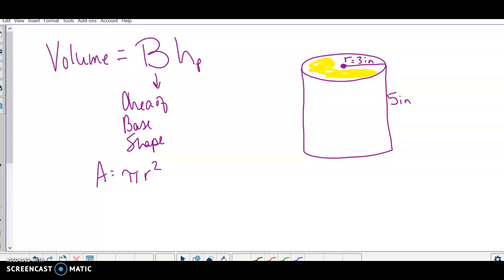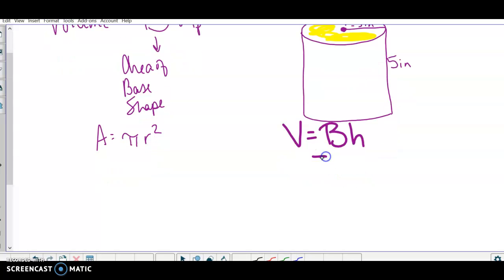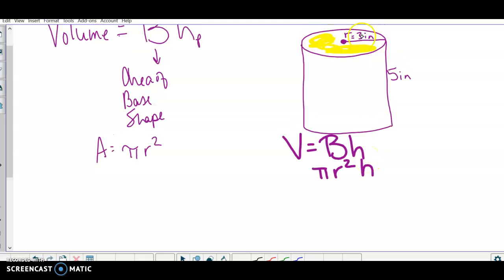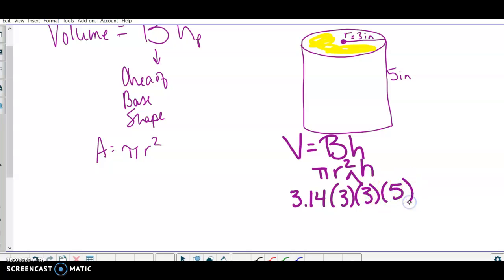So I'm going to plug my numbers in to my formula. So V equals big B H, and in place of big B I'm going to write pi r squared, and I can go ahead and bring my H down. Now none of my numbers are a multiple of 7, so I'm going to stick with 3.14 times 3 times 3. Remember, squared means times itself, times 5.